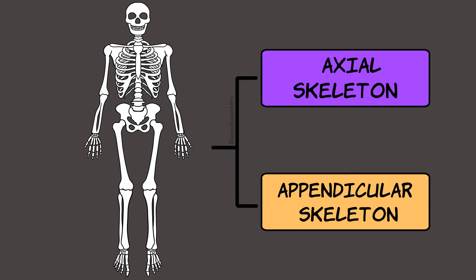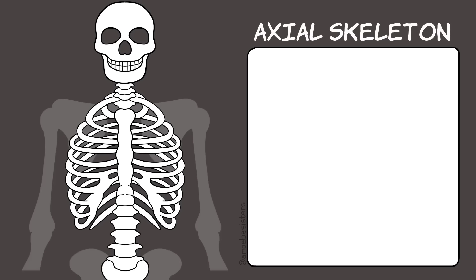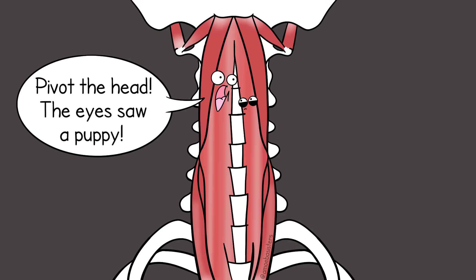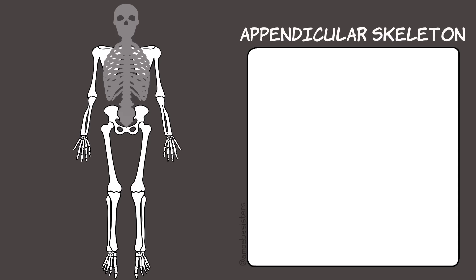An adult human generally has 206 bones — a few more as a baby, but some fuse together by adulthood. The human skeleton can be divided into the axial skeleton and the appendicular skeleton. The axial skeleton, think central axis of a human, includes bones in the skull, in your ears (called ossicles), the bone in your throat (called the hyoid), the vertebral column, and the ribcage. Muscles attach to these bones to let you move your head and neck, and also to breathe.